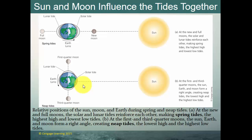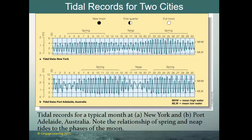At the new and full moons, the solar and lunar tides reinforce each other, making spring tides — the highest highs and lowest lows. At the first and third quarters, the sun, earth, and moon form a right angle, creating neap tides — the lowest highs and highest lows. You can see this in the tidal record for New York City and Port Adelaide, Australia, where the phases of the moon clearly drive changes between spring and neap tides. The tides are never exactly the same from day to day because the moon's position changes by about 50 minutes each day.